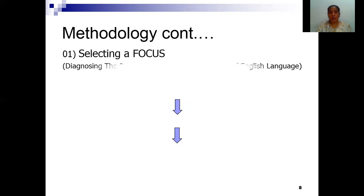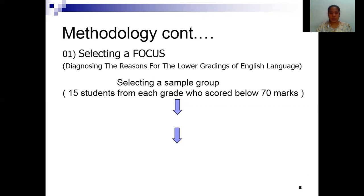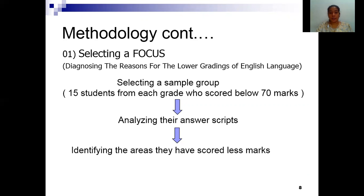When selecting a focus group, 15 students from each grade who scored below 70 marks were selected. Then their papers were analyzed and I identified the areas that they had scored fewer marks.